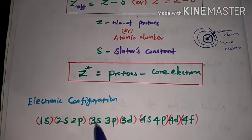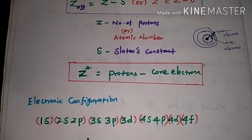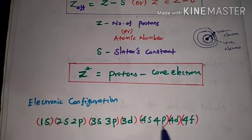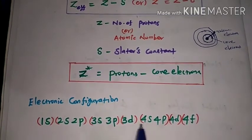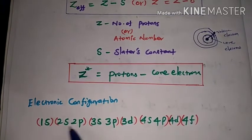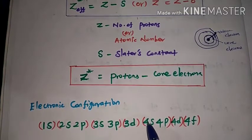The first step is electronic configuration: 1s, 2s, 2p, 3s, 3p, 3d, 4s, 4p, 4d, 4f, and so on. The shells are organized as: first shell is 1s, second shell is 2s and 2p, third shell is 3s, 3p, 3d, fourth shell is 4s, 4p, 4d, 4f.